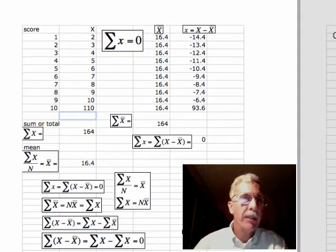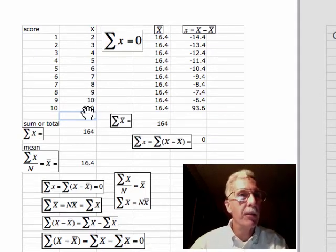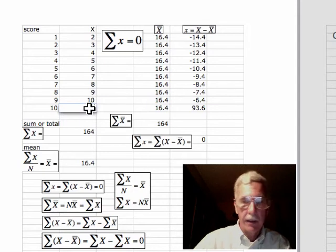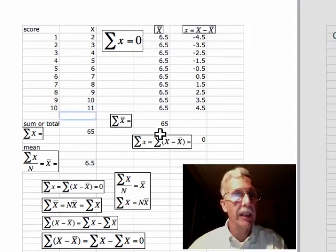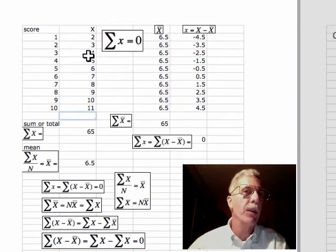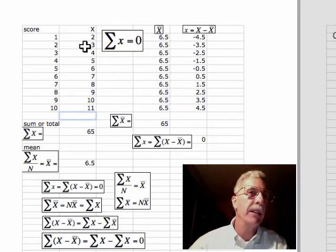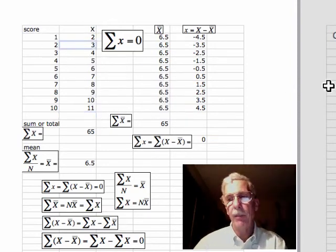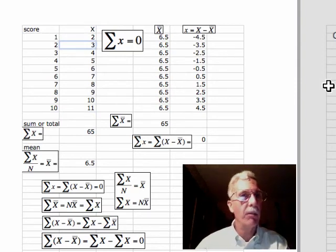So what happens is, when we have extreme scores, let's turn this back to 11. Now we're back to where we were with 65. When we have extreme scores, it's going to move the mean around so it's right in the balancing point where the deviations, the plus and the minus deviations will balance out.